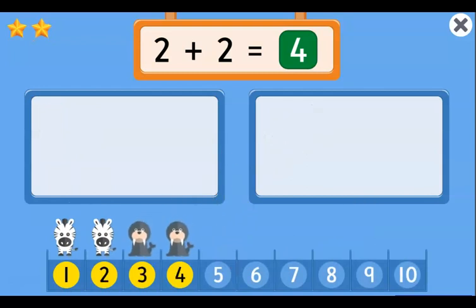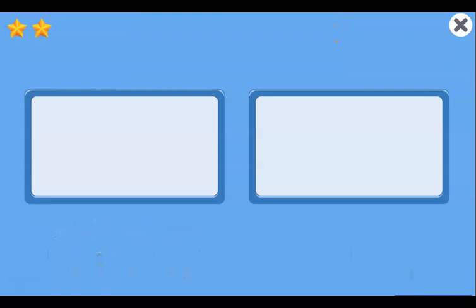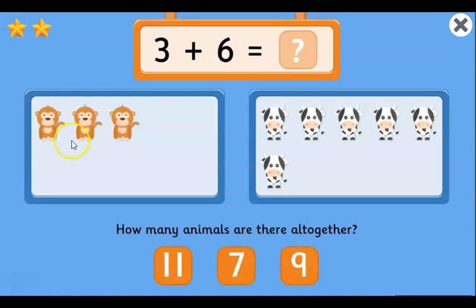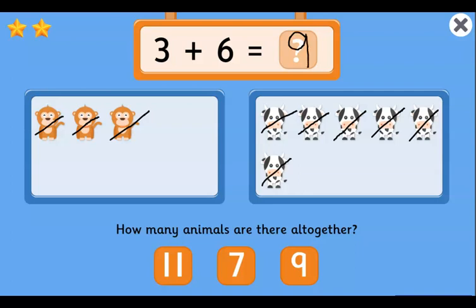Let's work out the last one together — three and six. We have three monkeys and six cows. How many animals are there all together? Let's start counting: one, two, three, four, five, six, seven, eight and nine. So I can write nine here near the equal sign, and then click on nine.